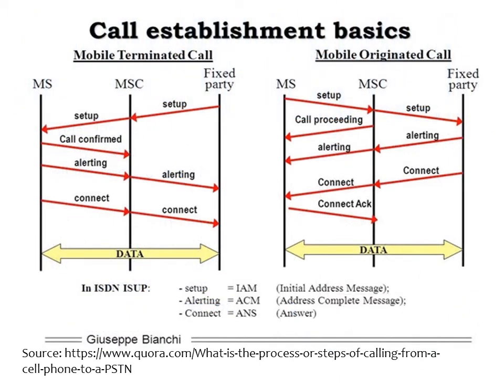How is a call established? A mobile terminated call happens as shown in the figure on the left, whereby a mobile subscriber sets up a call through the mobile switching center, that is an MSC. A call is confirmed, an alert is sent, a connection is established, and then there is data transmission between the mobile subscriber and a fixed party.